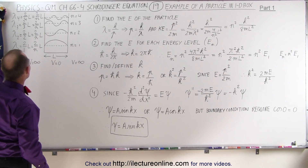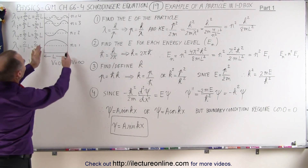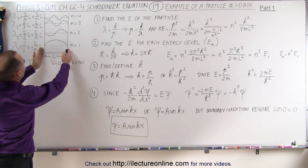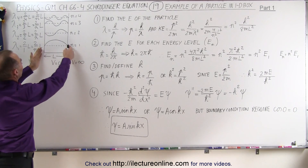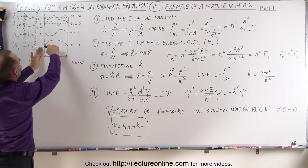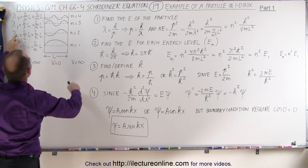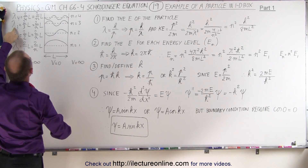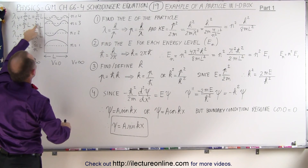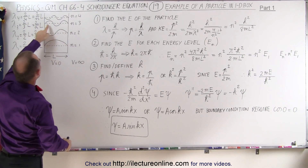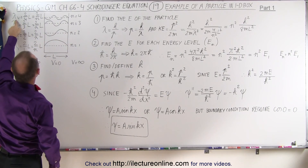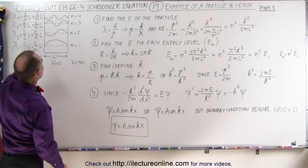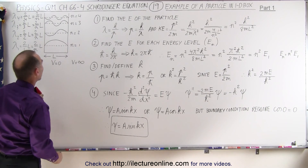In this case, lambda is equal to twice the length of the box, because this is only half a wavelength. For n=2, lambda equals the length of the box. For n=3, lambda equals two-thirds the length of the box. And for n=4, lambda equals one-half the length of the box.